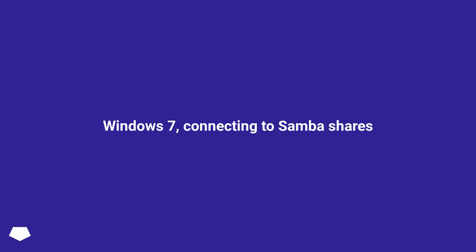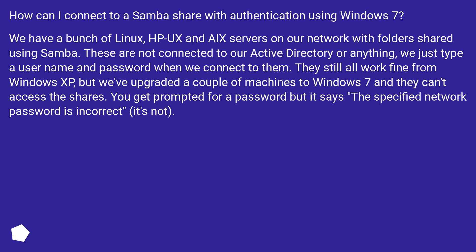Windows 7: Connecting to Samba Shares. How can I connect to a Samba share with authentication using Windows 7? We have a bunch of Linux, HP-UX, and X servers on our network with folders shared using Samba. These are not connected to Active Directory — we just type a username and password when we connect to them. They still all work fine from Windows XP, but after upgrading a couple of machines to Windows 7, they can't access the shares. You get prompted for a password but it says the specified network password is incorrect — but it's not.